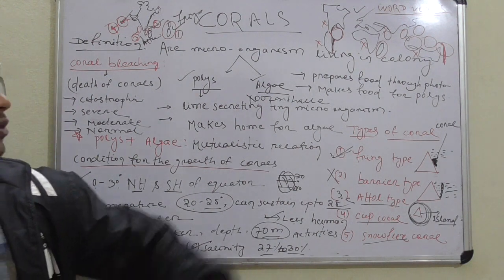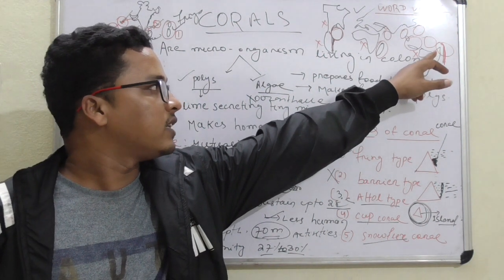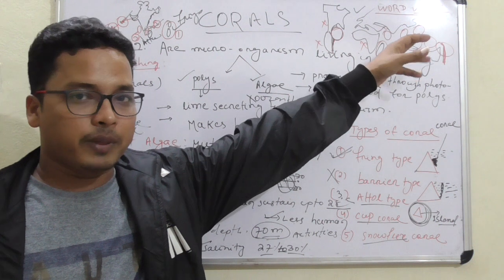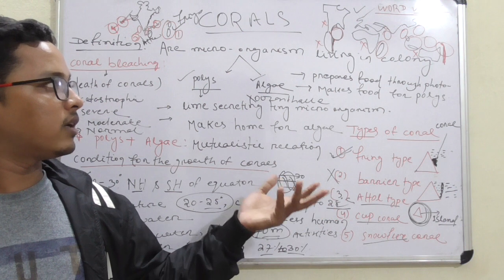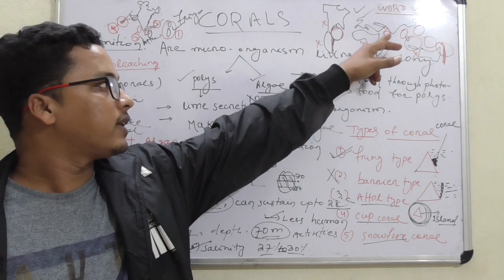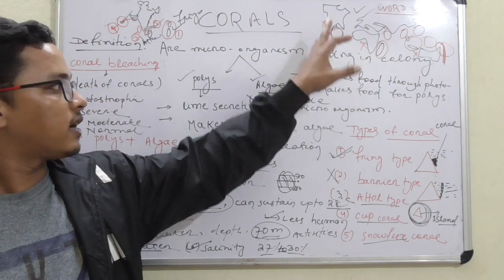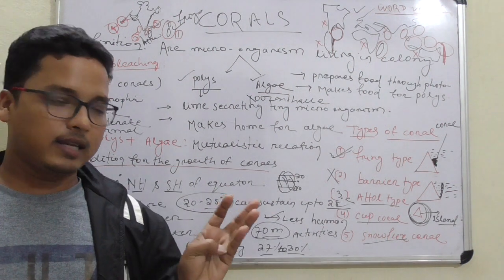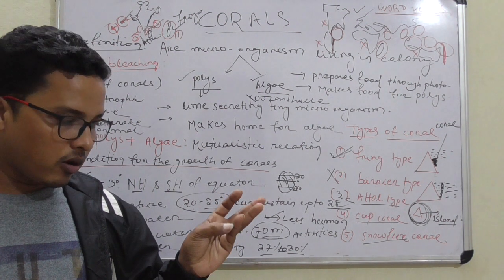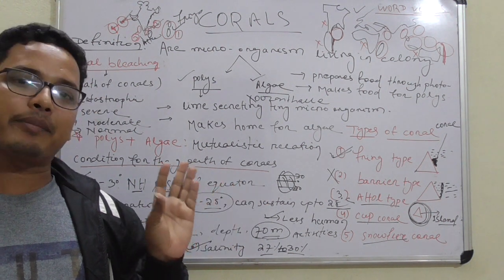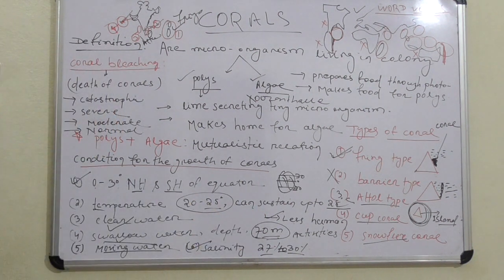For the world distribution, corals are found in the eastern part of Australia, all around the South China Sea region including Indonesia and Malaysia, the western part of India, Madagascar, the Caribbean Sea, Arabian Sea, Bay of Bengal, Indian Ocean, and the western part of the Pacific Ocean.